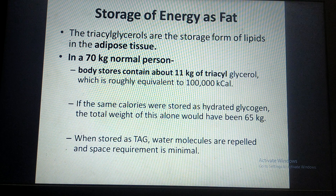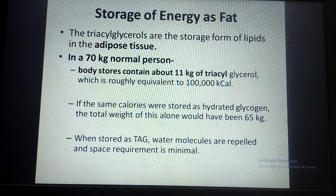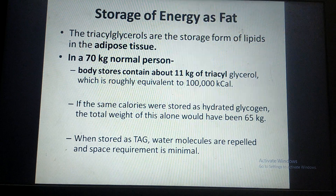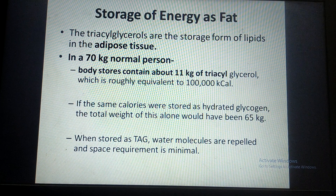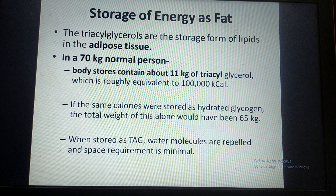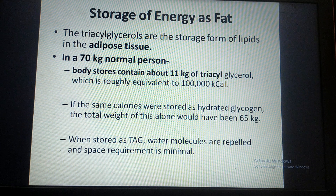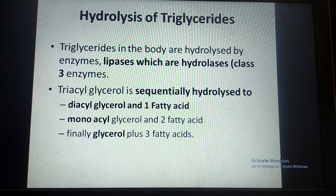Triglycerides are the major fat stored in our body in adipose tissue. In a normal 70 kg man, about 11 kg of triglycerides are stored, which supplies about 1 lakh kilocalories during fasting and starvation. This fat is stored in small volume compared to other storage forms of energy like glycogen. If you want to store glycogen equivalent to 1 lakh kilocalories, that glycogen would weigh around 65 kg, whereas triglycerides require only 11 kg.